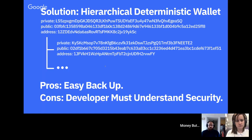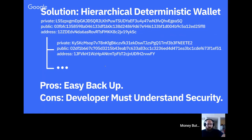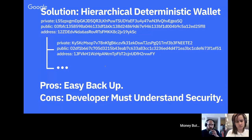The solution is hierarchical deterministic wallets, or HD keys. The basic idea is you start with one master key, and from that you derive new paths in a tree structure. Each key can derive more keys from it, creating a giant tree. The main pro is you only have to back up the single master key. There is one security gotcha to be aware of, different from a bag of keys.